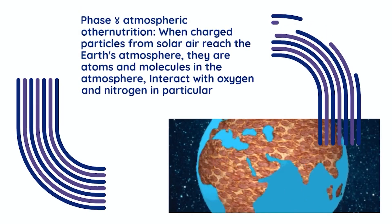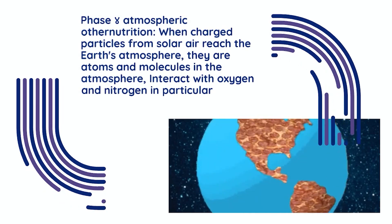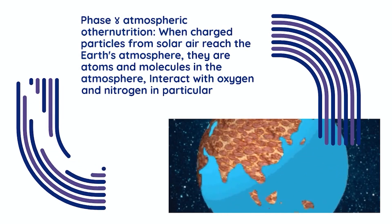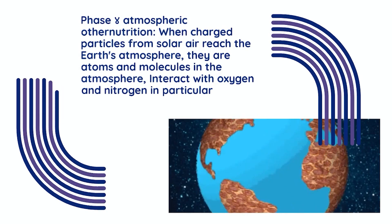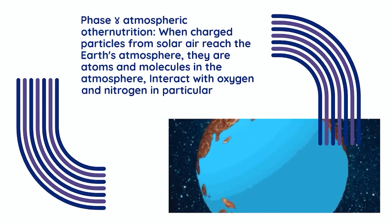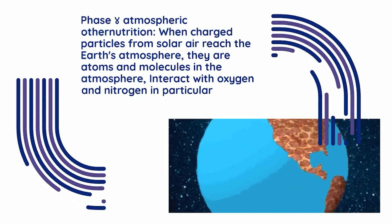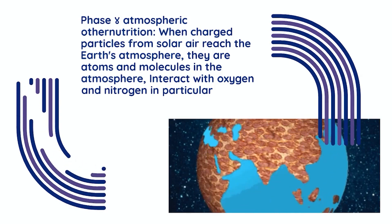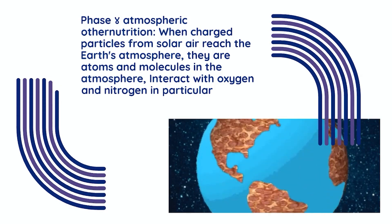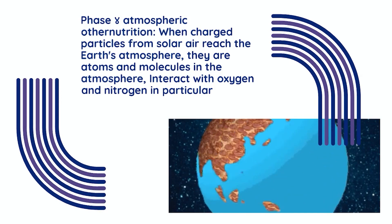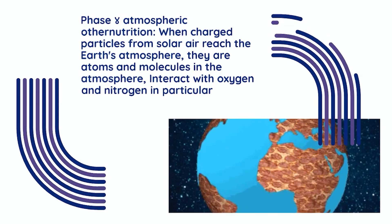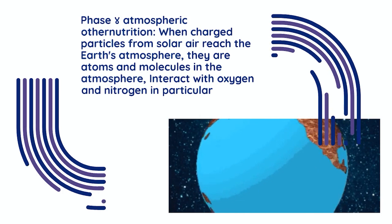Phase 4 is Atmospheric Interaction. When charged particles from the solar wind reach the Earth's atmosphere, they interact with atoms and molecules in the atmosphere, particularly oxygen and nitrogen.